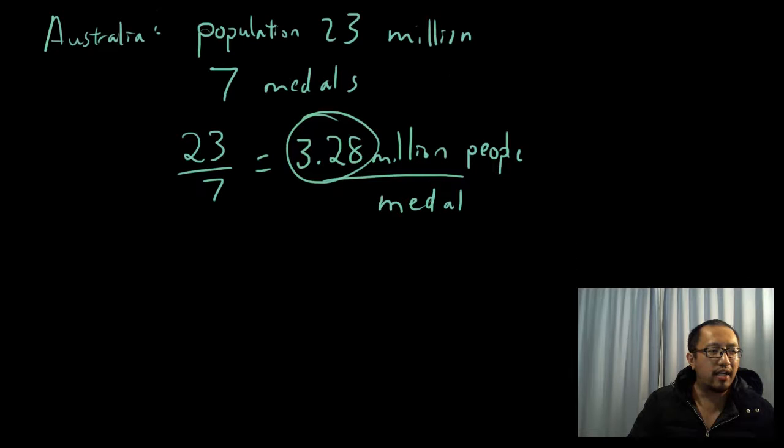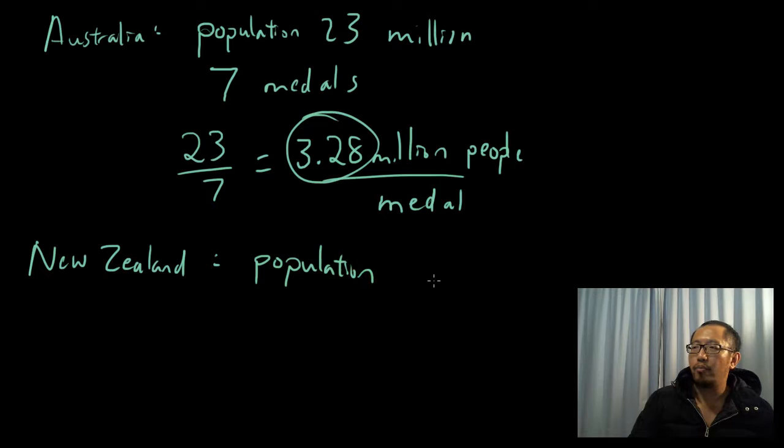Now Australia is actually not doing the best, because New Zealand, which is the country that I also have citizenship for, has a population of 4.6 million, which has increased quite a bit since I left.